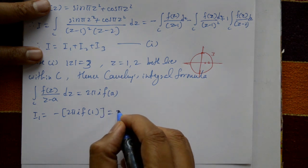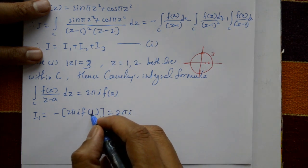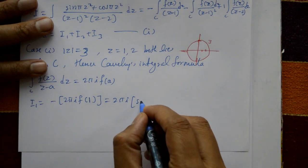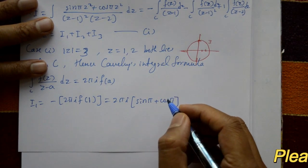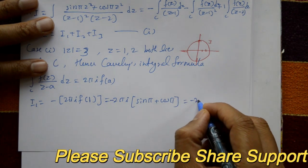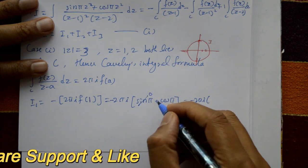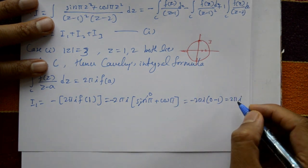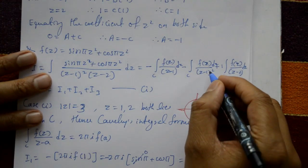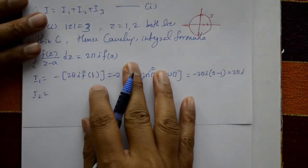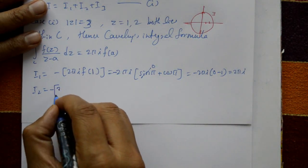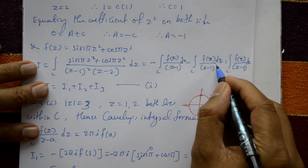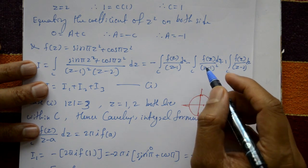Now f(1) = sin π(1)² + cos π(1)² = sin π + cos π = 0 + (-1) = -1. Therefore I1 = -2πi × (-1) = 2πi.